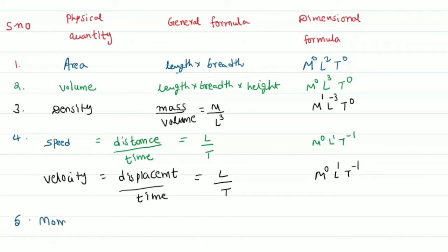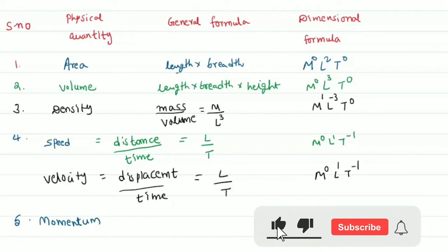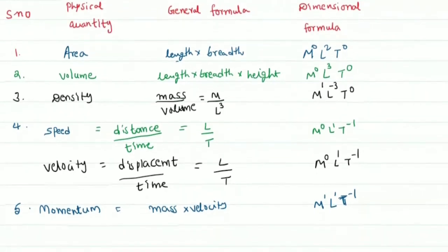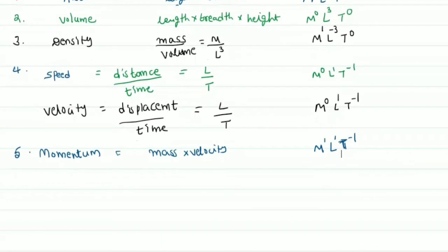Next is momentum. Momentum is mass into velocity — it is the product of mass and velocity. Momentum is a property related to the motion of a body.